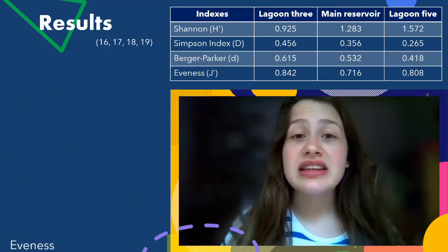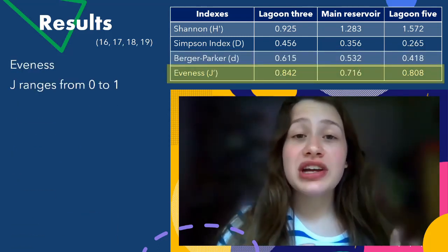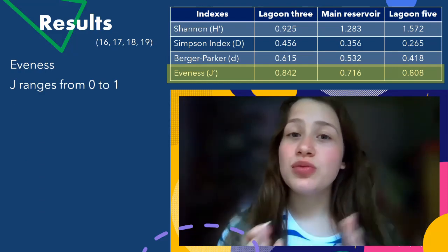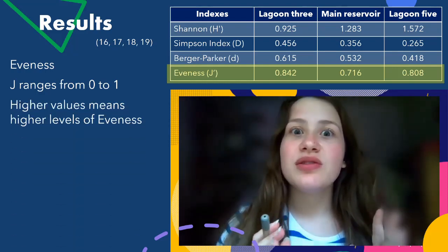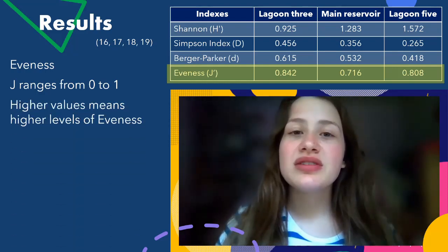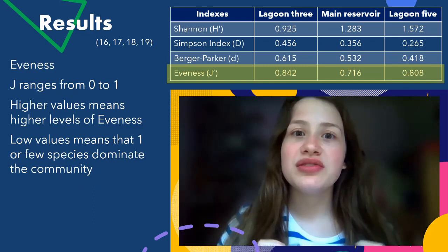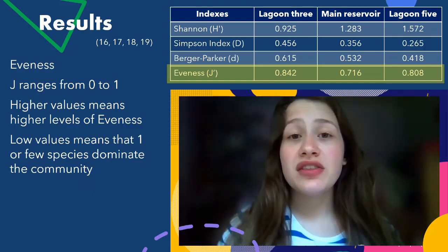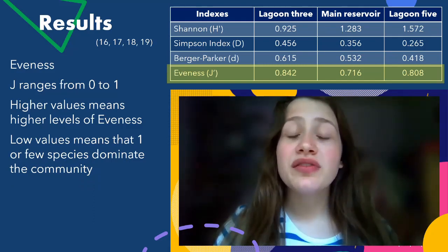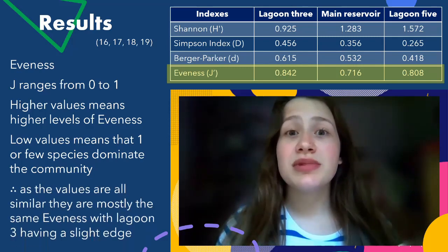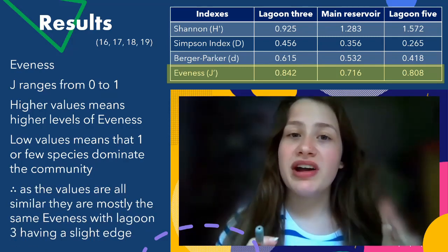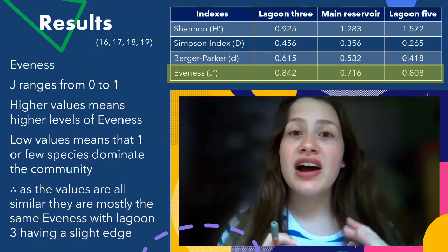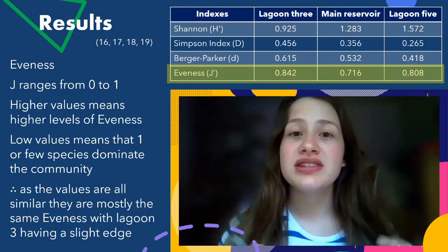Finally, the Evenness score. J values range from 0 to 1, with 1 meaning a higher level of evenness, and lower values meaning one or few species dominate the community. All three sites have quite similar and quite high J values, meaning they all have high evenness of similar quality.